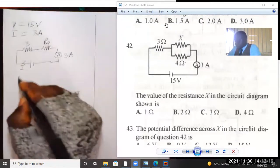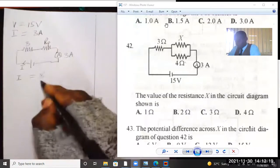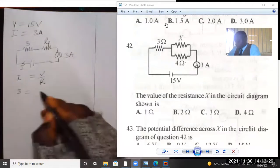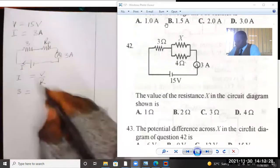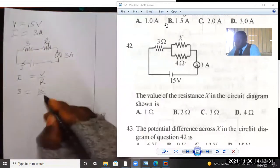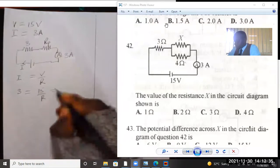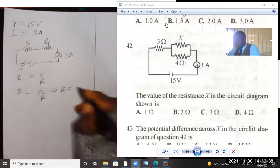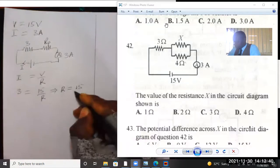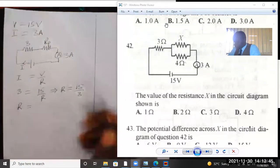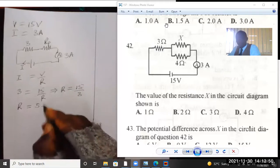From Ohm's law, I is equal to V over R. In this situation, the current is given as 3 amperes. The voltage is 15. We need to find the effective resistance, R, to be 15 divided by 3. That is 5 ohms.